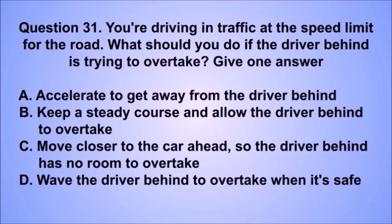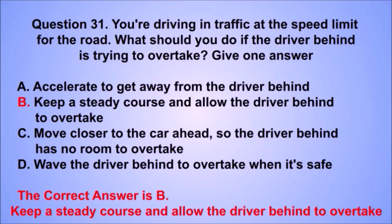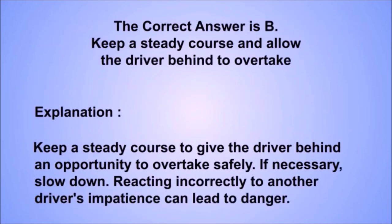Question 31. You're driving in traffic at the speed limit. What should you do if the driver behind is trying to overtake? The correct answer is B: Keep a steady course and allow the driver behind to overtake. Keep a steady course to give the driver behind an opportunity to overtake safely. If necessary, slow down. Reacting incorrectly to another driver's impatience can lead to danger.